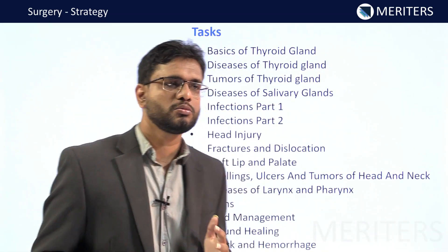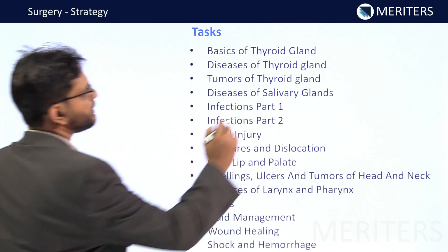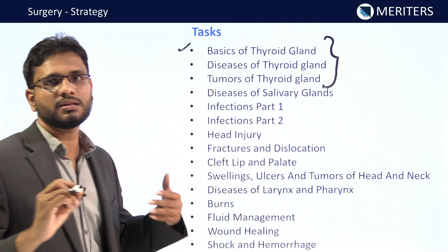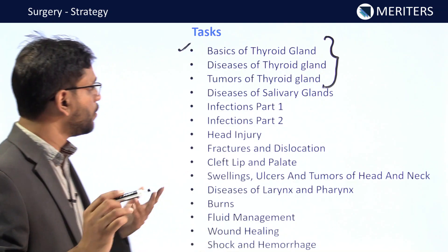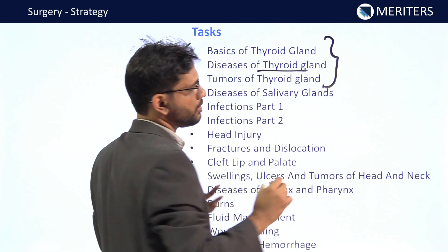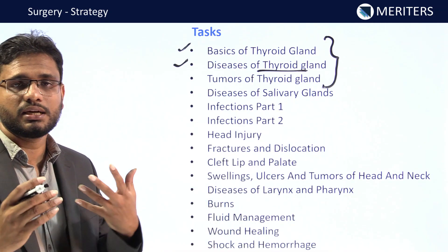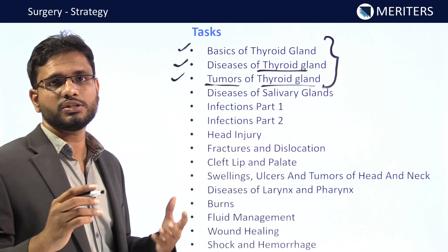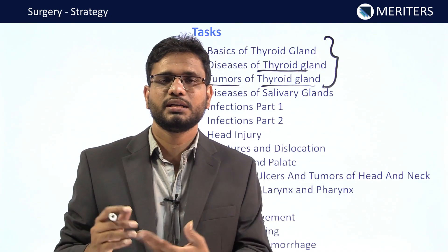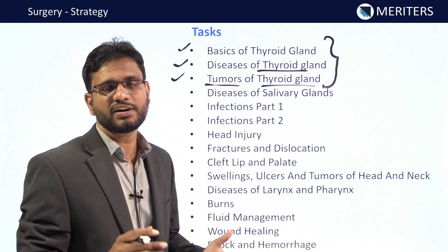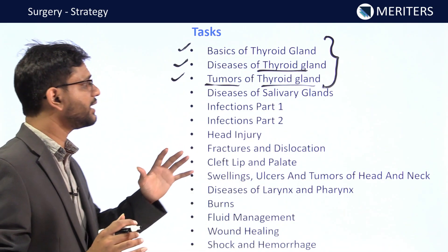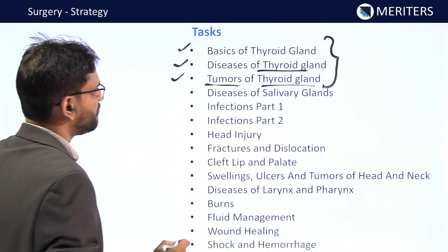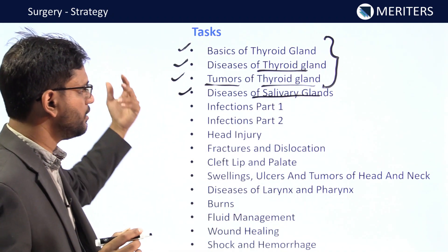Coming to the tasks for general surgery: at least one question will come from the thyroid gland — either on basic hormones, basic physiology, basic anatomy, or diseases like hyperthyroidism or hypothyroidism including diagnosis, treatment, and clinical features. It can also come on tumors of the thyroid gland — for example, which tumor has increased calcitonin, which spreads through lymphatics, which spreads hematogenously. At least one question is guaranteed from these three thyroid sub-topics. Then we have diseases of the salivary gland from a surgical aspect.